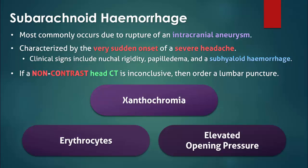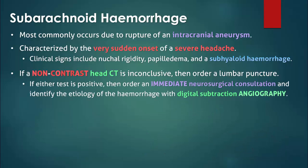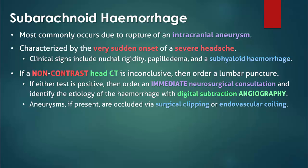The presence of red blood cells may be due to a traumatic tap, in which case fewer erythrocytes would be expected in the last tube in comparison with the first. If either the head CT or lumbar puncture are indicative of a subarachnoid hemorrhage, then order an immediate neurosurgical consultation. Digital subtraction angiography is the preferred test to identify the etiology of the bleed. Aneurysms, if present, are usually occluded via surgical clipping or an endovascular coil.